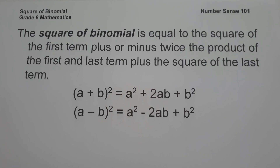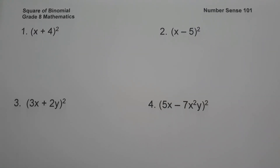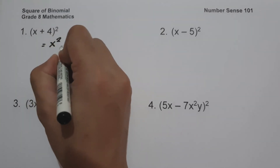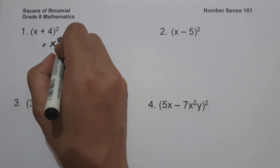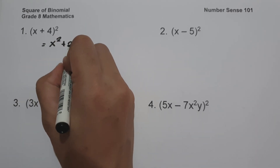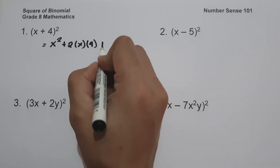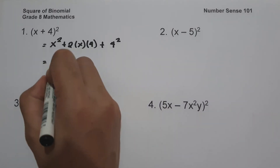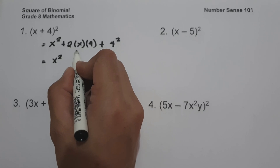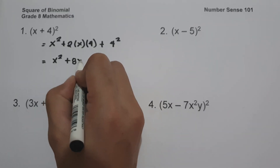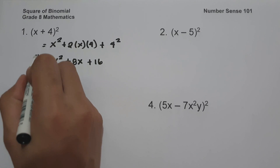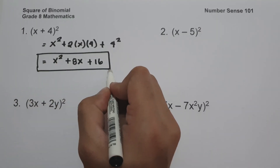Let's start with an example. On the first example we have the quantity (x + 4) squared. To simplify, we square the first term, that is x², and we multiply the first and last term by the constant 2: 2 times x times 4, plus the square of the last term, 4 squared. This gives us x² + 8x + 16, and this will be our answer.